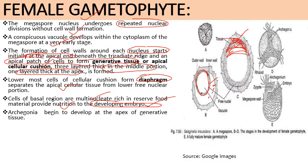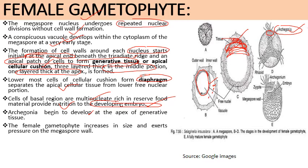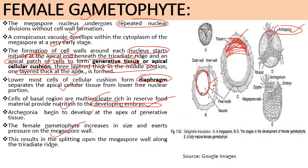Archegonia start to develop at the apex of the generative tissue. The growing female gametophyte exerts pressure on the megaspore wall, resulting in splitting along the tri-radiate ridge, through which the tissue emerges.